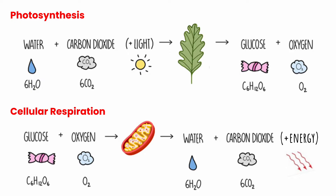This helps to regulate atmospheric concentrations of carbon dioxide and oxygen. Another thing these reactions have in common is that they both deal with the conversion of energy. In photosynthesis, light energy is captured from the sun and stored in glucose. In cellular respiration, however, the energy in glucose is converted into chemical energy by living organisms, allowing their bodies to perform life-sustaining activities.